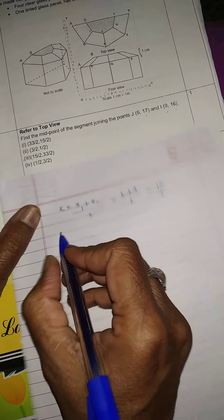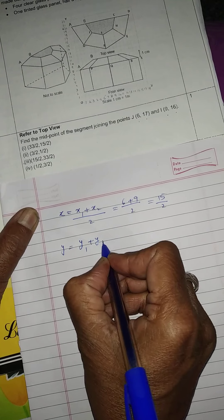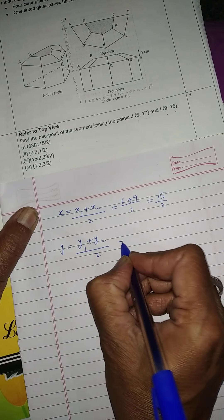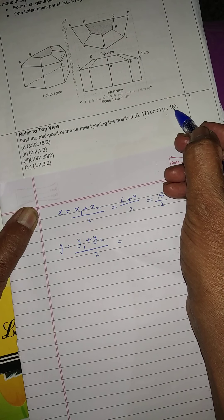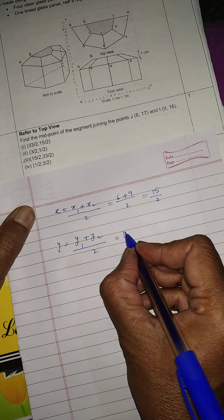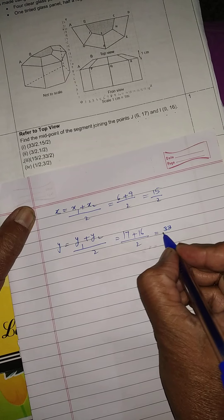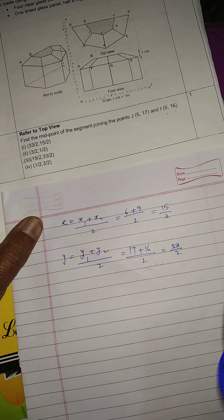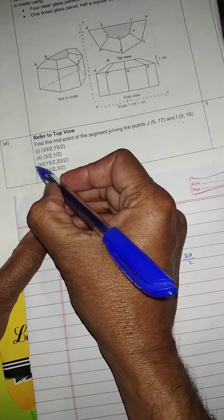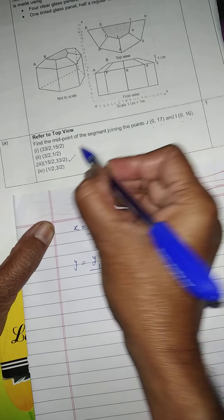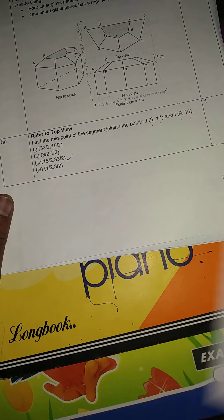Similarly, y coordinate will be calculated by y1 plus y2 upon 2. Here y1 is 17, y2 is 16. So 17 plus 16 upon 2 that will be equal to 33 upon 2. Which option is correct? That is third option. That is correct. This was part A.